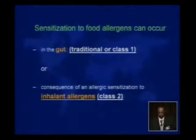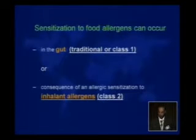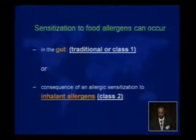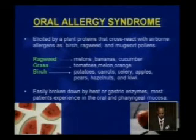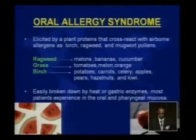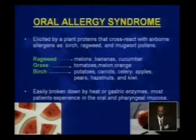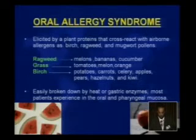Sensitization to food allergy can occur in two ways: the traditional way through the gut, or as a consequence of allergic sensitization through inhalant allergens, which we call class two sensitization. Oral allergy syndrome is elicited by a plant protein that cross-reacts with airborne allergens such as ragweed, birch, and mugwort.